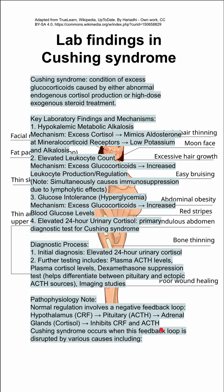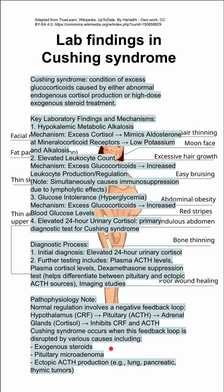Cushing syndrome occurs when this feedback loop is disrupted by various causes. More specifically, it can be caused by exogenous steroids, pituitary adenoma, ectopic ACTH production from the lung, pancreas, or thymus, and also adrenal problems such as hyperplasia, adenoma, or carcinoma.